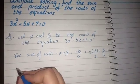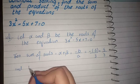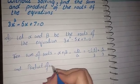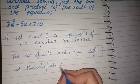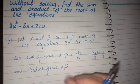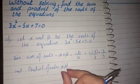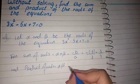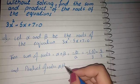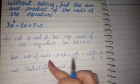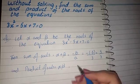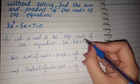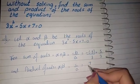Product of roots: alpha beta. Product of roots is c by a. Putting the values, 7 by 3.